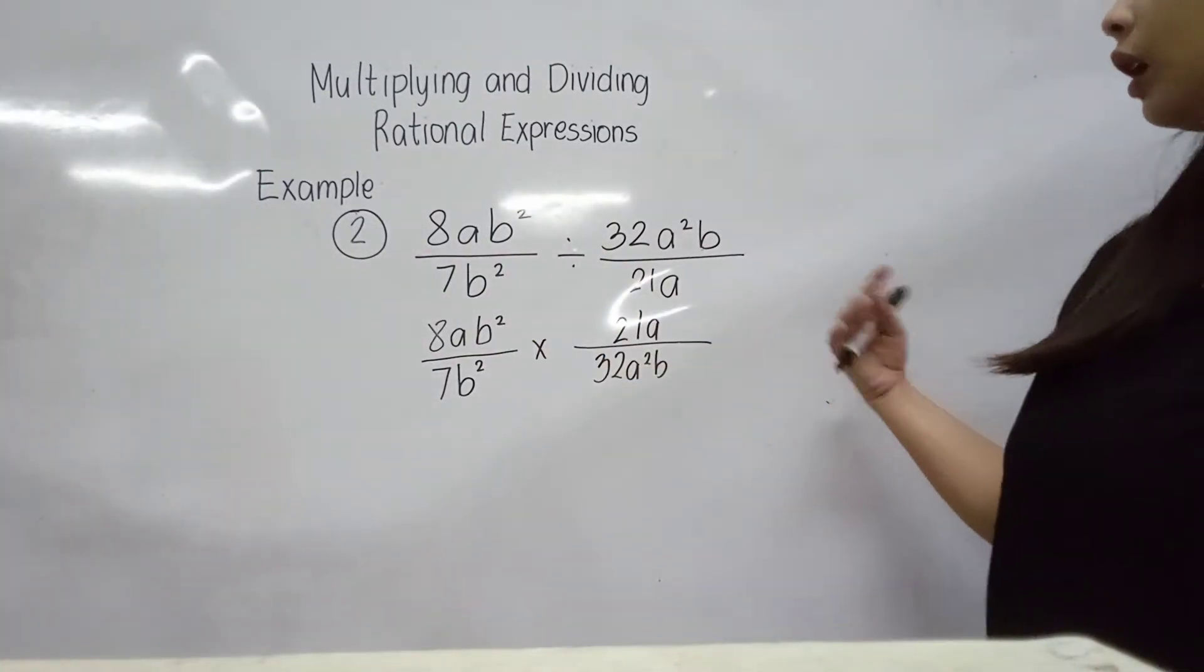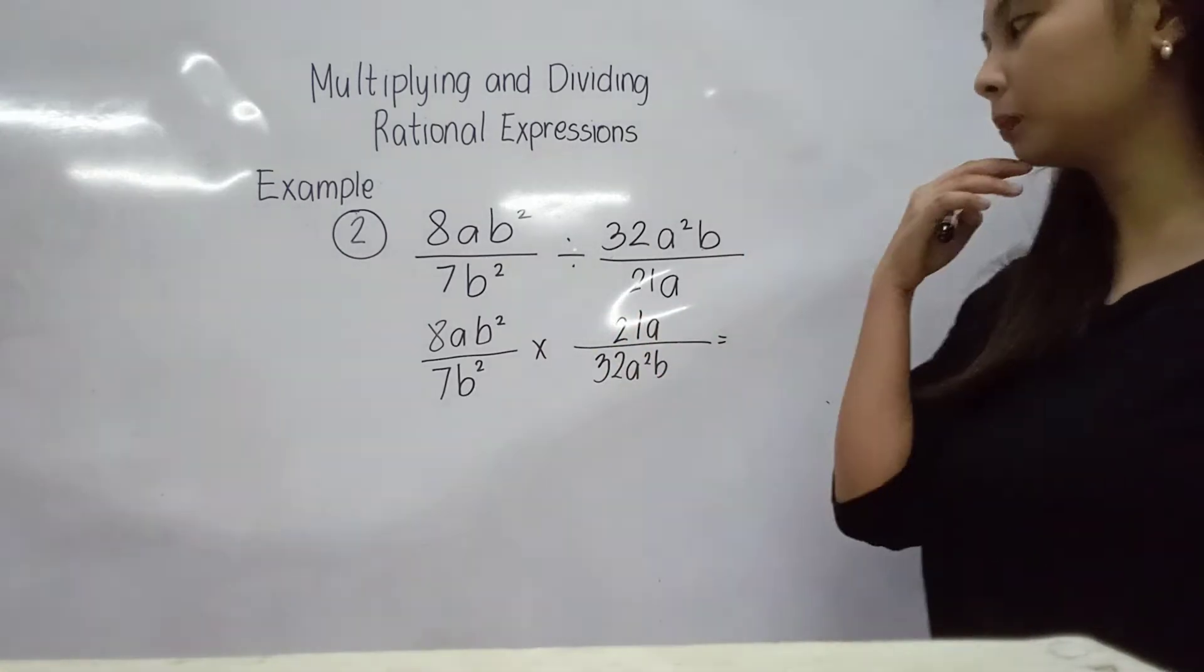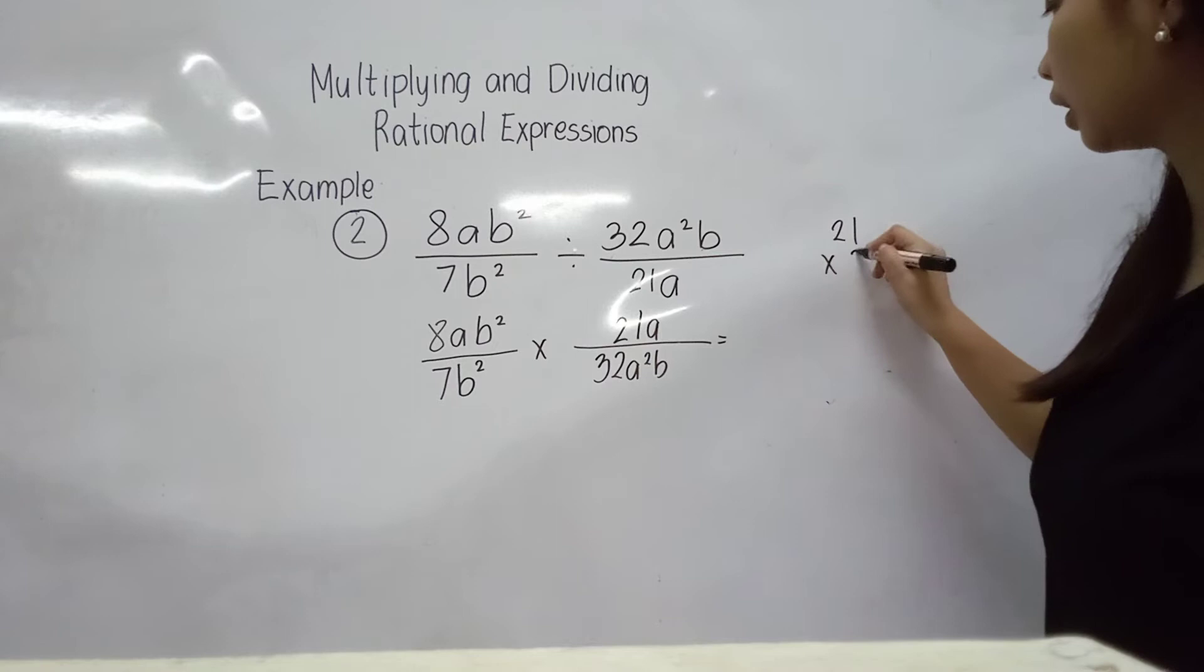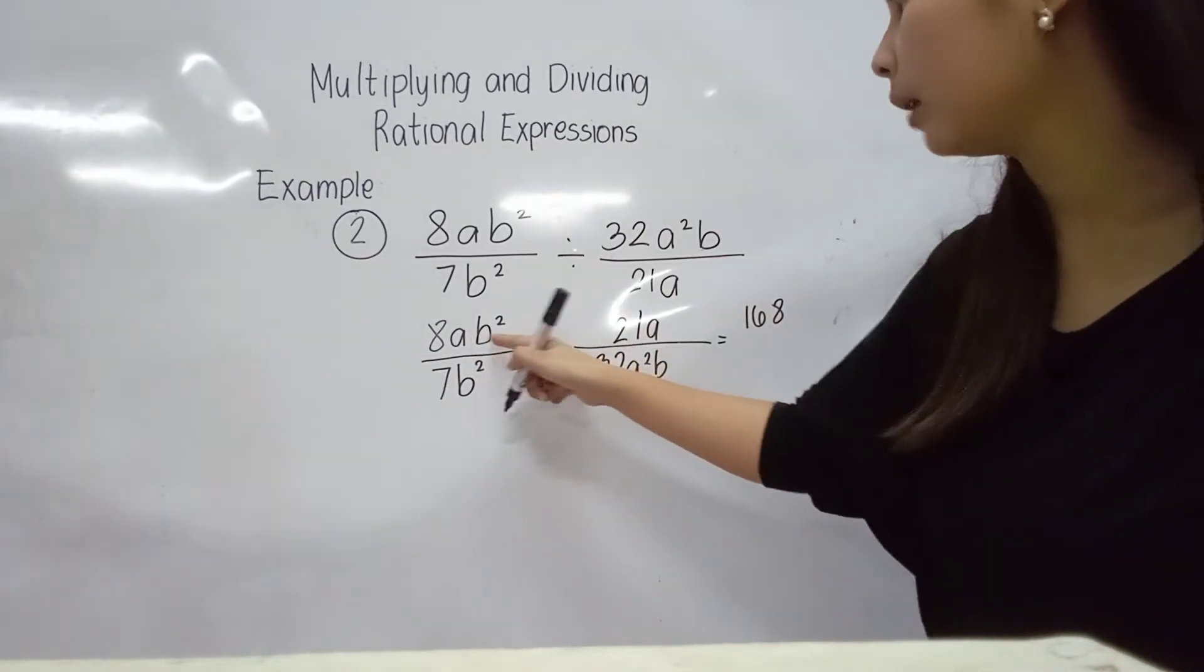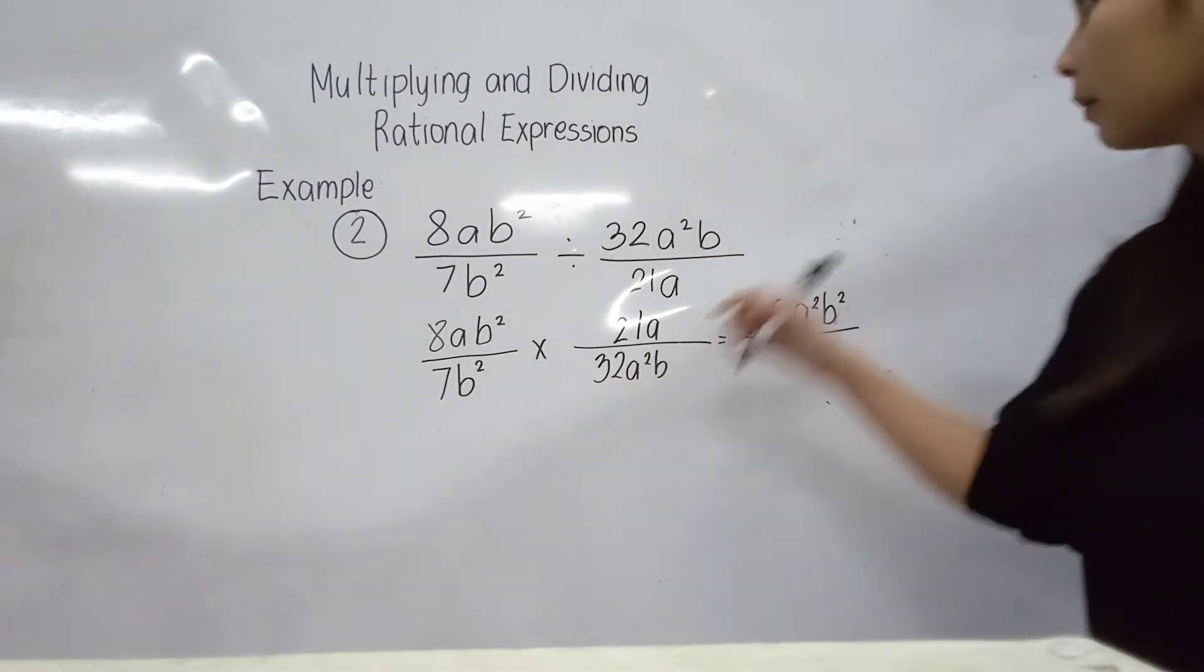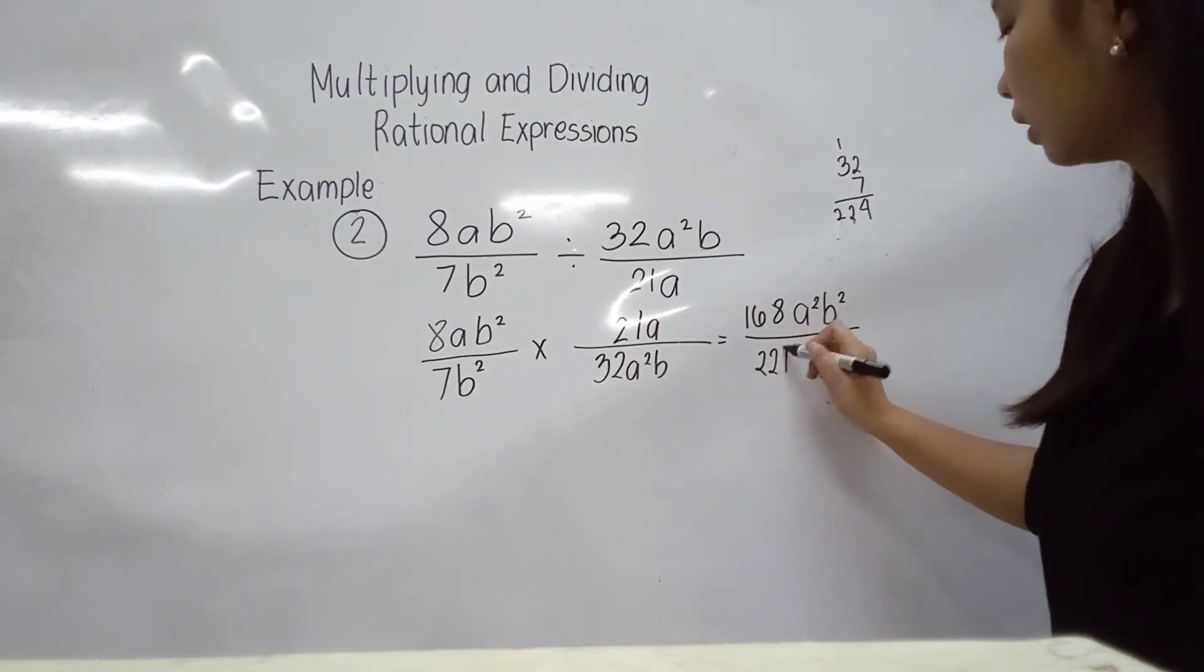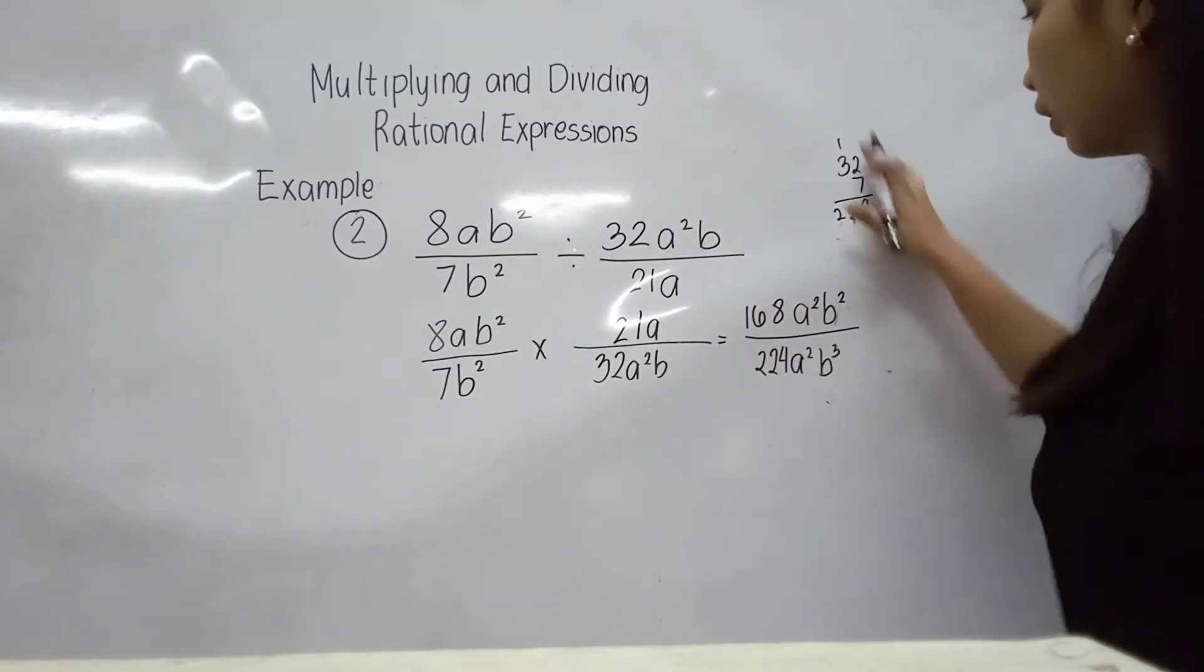So ang gagawin ko muna, try natin i-diretso lang. We have 8 times 21. So coefficient ko lang. We have 21 times 8 - we have 168. Next, ab squared and then a - we will be having a squared b squared. Next, 7 times 32. Multiply, we'll be having 32 times 7. So 7 times 2 is 14, carry 1, 21, and then 22. So ang sagot is 224. And then a squared, and then ilan yung b natin? B squared plus b is b cubed na po siya.